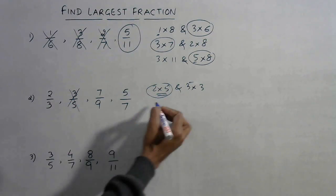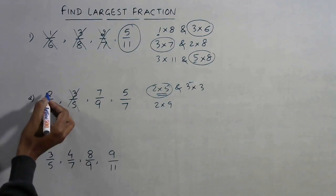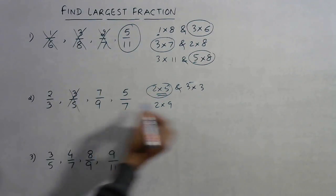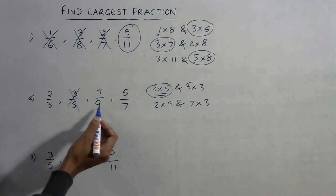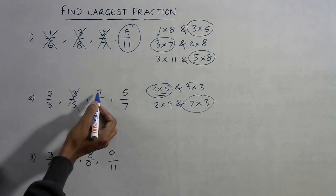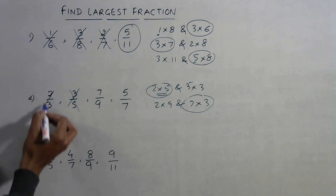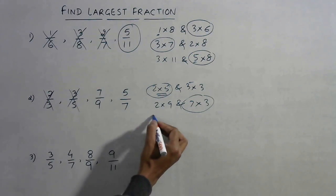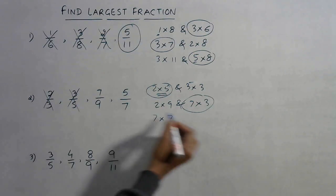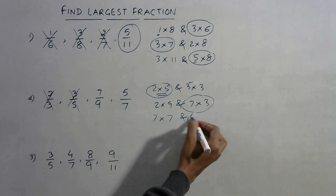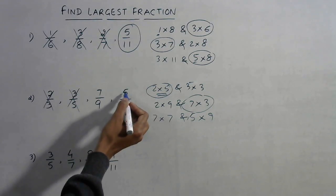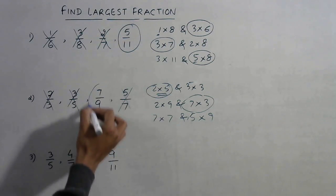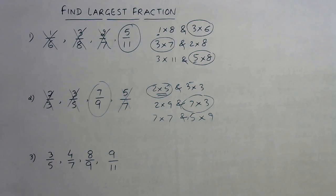Now compare 2/3 and 7/9: two into nine is 18, seven into three is 21. Seven into three is larger and two into nine is smaller, so we retain numerator seven and discard 2/3. Finally, compare 7/9 and the next fraction: seven into seven is 49 and five into nine is 45. Forty-nine is greater and forty-five is smaller, so we discard the other fraction. The largest fraction is 7/9.